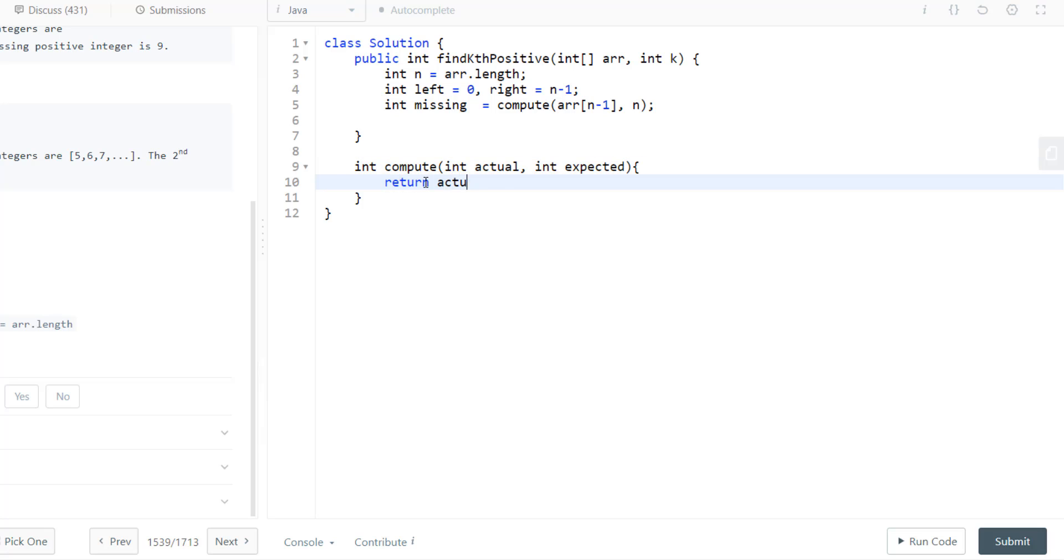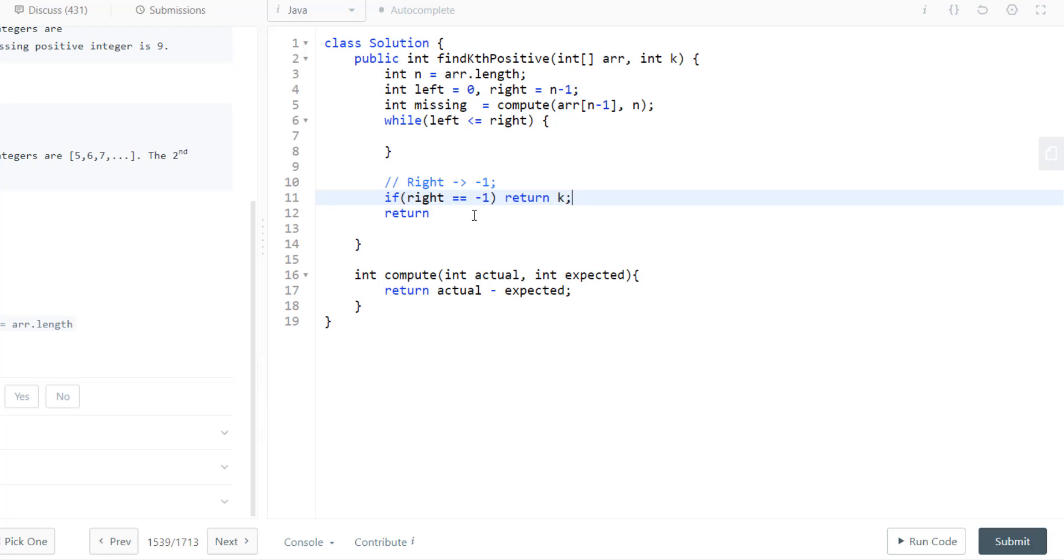Now we take a while loop: while left is less than or equal to right, we do something. Otherwise we return. We can get a situation where right becomes equal to minus 1, in which case we will return k. Otherwise we will return right plus k minus the missing numbers till that point, which becomes the element present minus the expected, that is index plus 1.